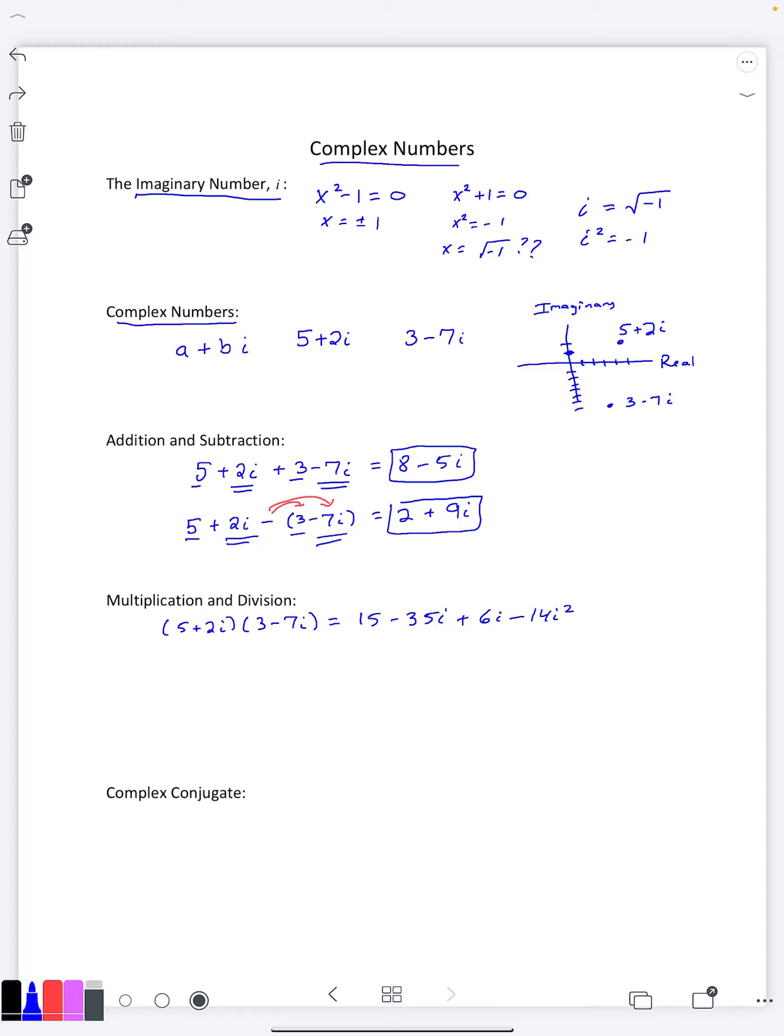Before we finish the problem though, we need to remember that this i squared thing here, that is negative one. So -14i squared is -14 times -1. And -14 times -1 is going to be +14. And so now we can combine like terms. 14 + 15 is 29. -35i + 6i is -29i.